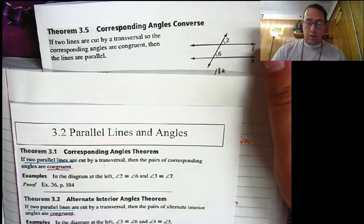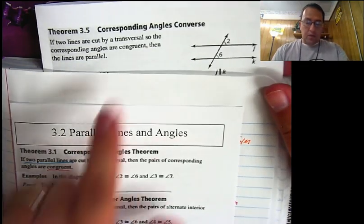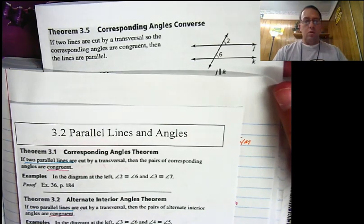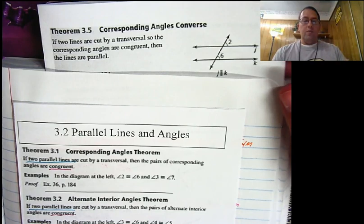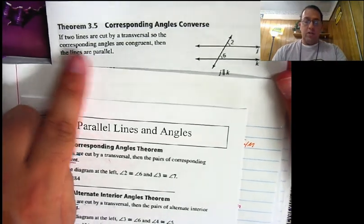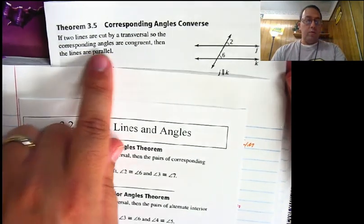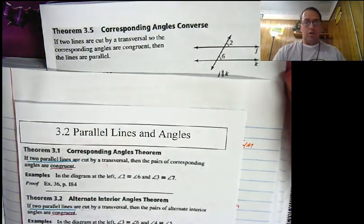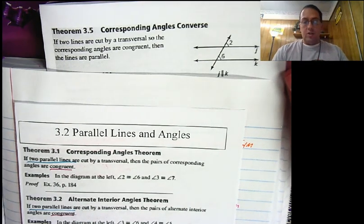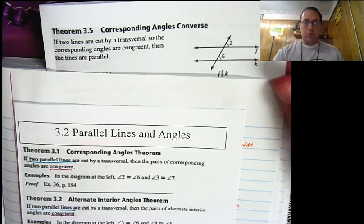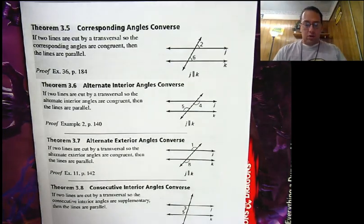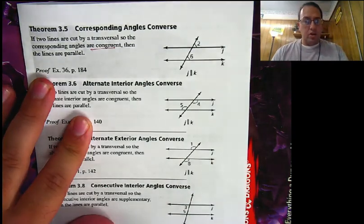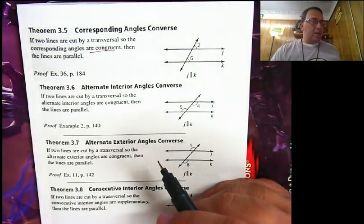Hopefully you remember what a converse is — we did talk about that a couple of weeks ago. A converse just changes the order of our conditional statement. So in the original theorem it says: if two parallel lines are cut by a transversal, then the pairs of corresponding angles are congruent. In the converse, it says: if two lines are cut by a transversal so that the corresponding angles are congruent, then the lines are parallel. So it takes it the opposite direction.